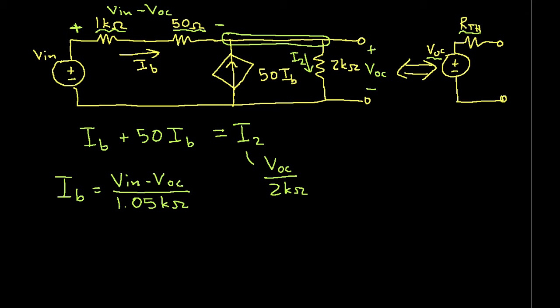And now we can plug this expression for I sub B into our equation above. We have 51 times I sub B, where we have that from the I sub B plus the 50 I sub B. We plug in VN minus VOC over 1.05k ohms for I sub B. And this is equal to VOC over 2k ohms.